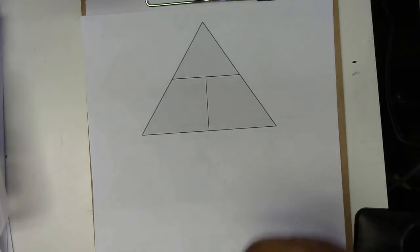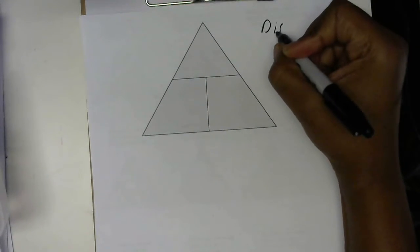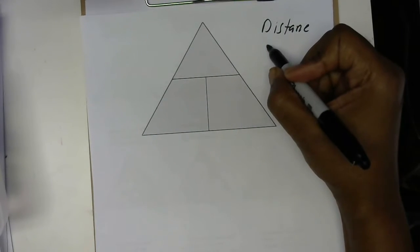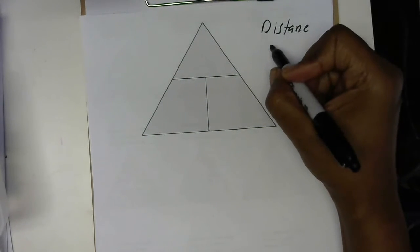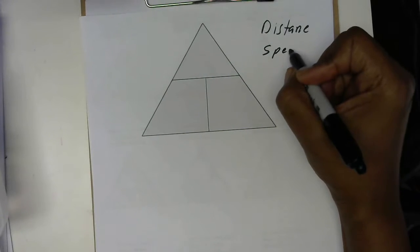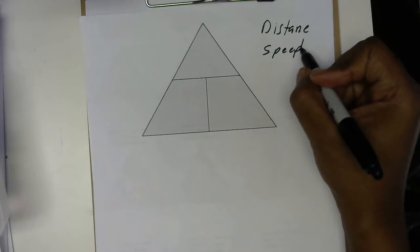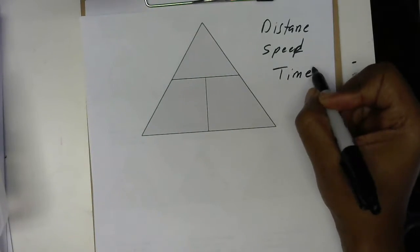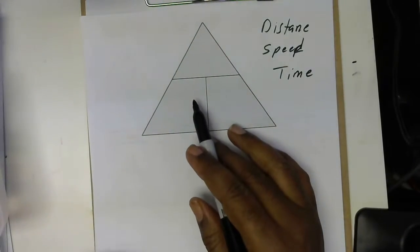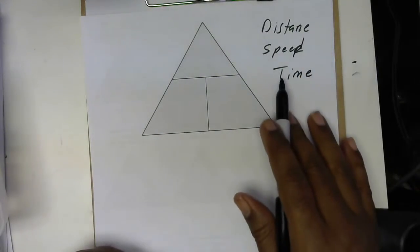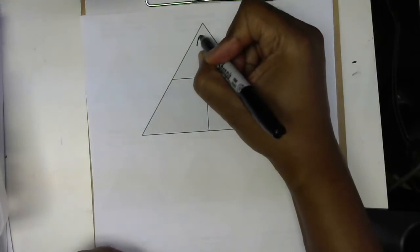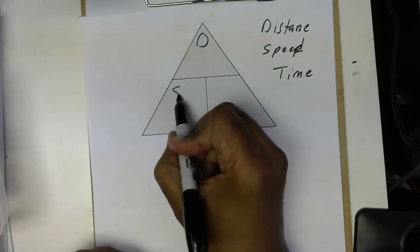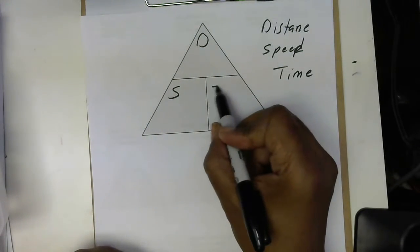It's time to talk about distance — the relationship between distance, speed, and time. We use this DST triangle, and we put all the letters in alphabetical order. This part of the triangle will be our distance, this part will be our speed, and this part will be our time.